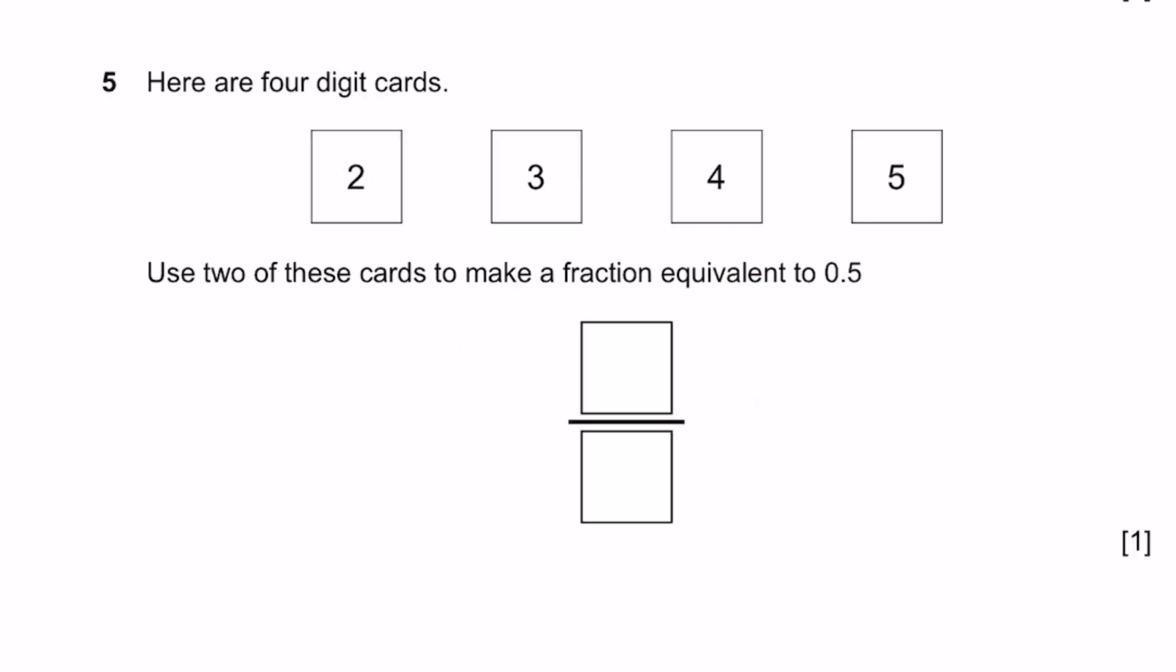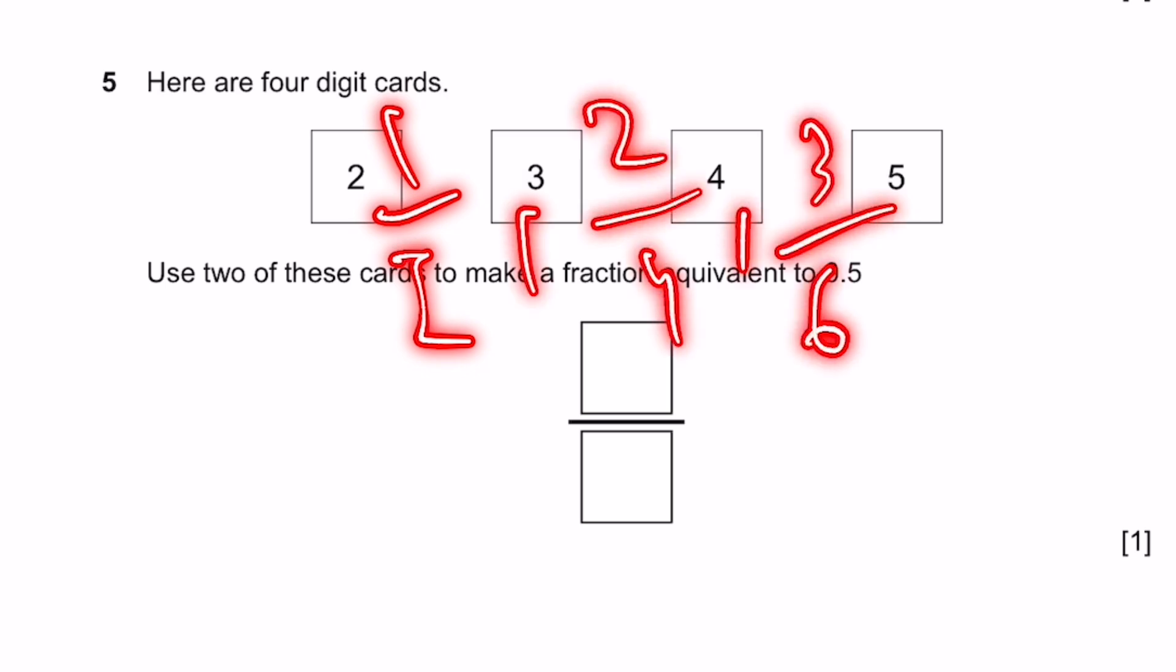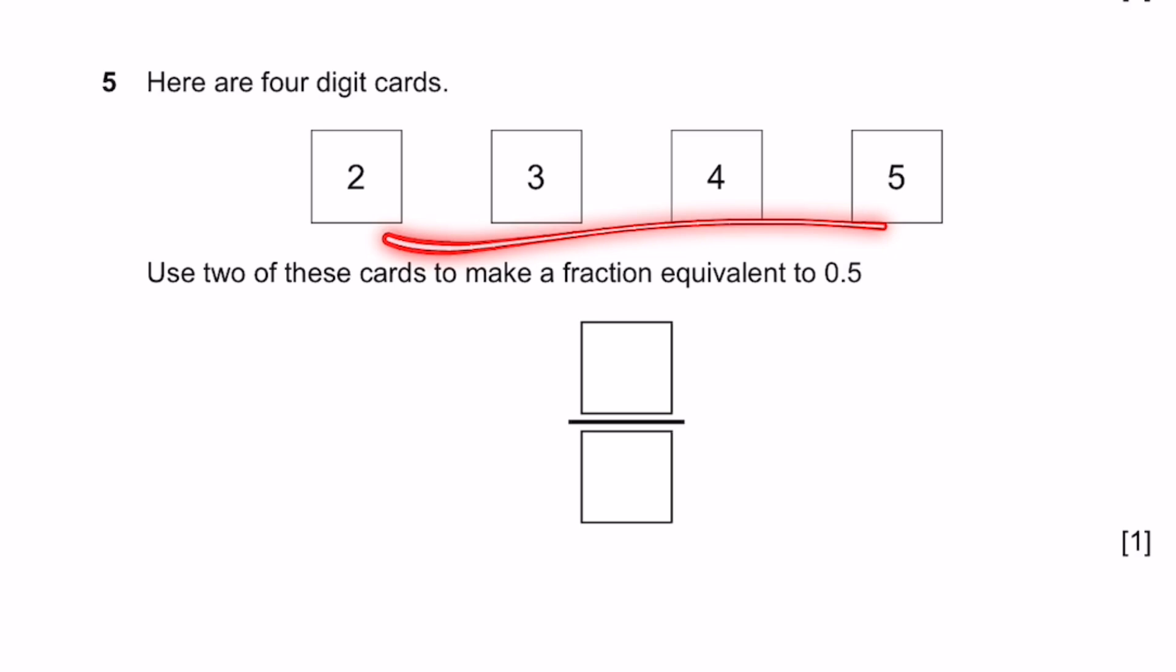Question 5. Here are 4 digit cards. Use 2 of these cards to make a fraction equivalent to 0.5. 0.5 can be 1 by 2, 2 by 4, 3 by 6, for example, using the cards given here. But only 2 by 4 is actually possible out of the 3 which I just mentioned, because the cards are 2, 3, 4, and 5, there's no 1 or 6 there. That's the answer, 2 by 4.